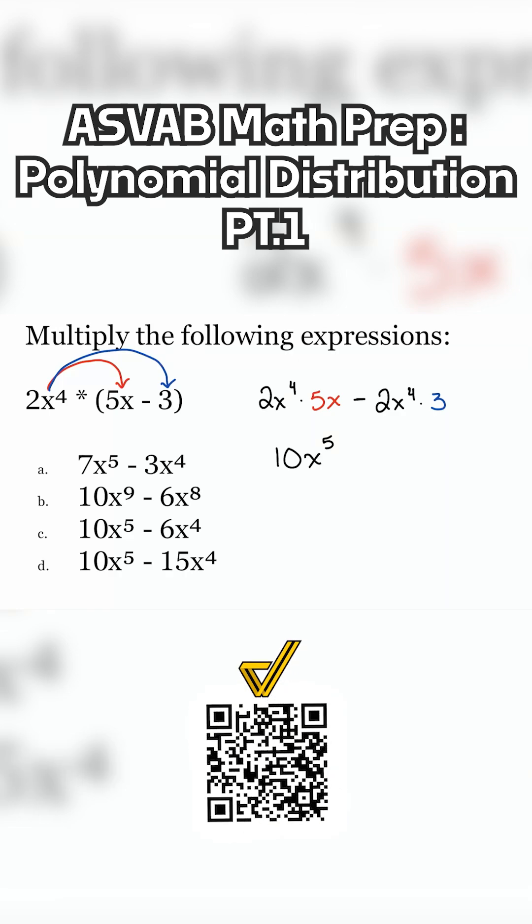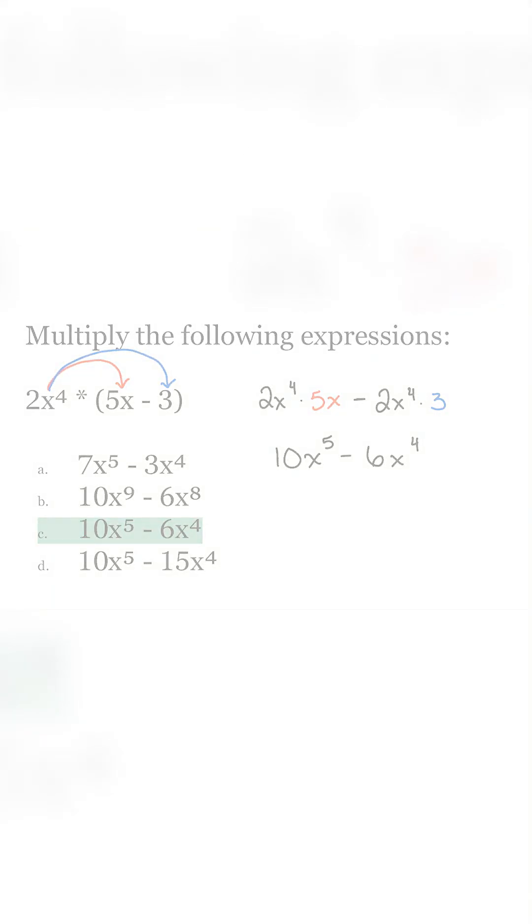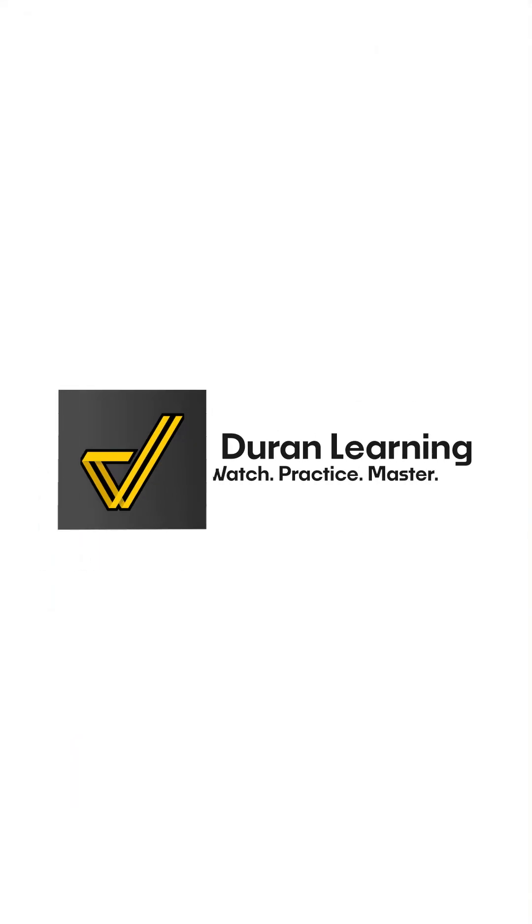Now with that, we're going to take a look at the right side here. We have 2x to the power of 4 multiplied by 3. So here again, we'll take those regular coefficients. 2 times 3, that's going to give us 6. And since there's nothing over here, we're just going to drop that x to the power of 4 down. And we're done. The correct answer here, my party people, will be answer choice C: 10x to the power of 5 minus 6x to the power of 4.